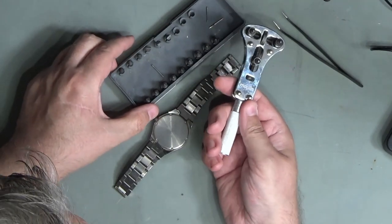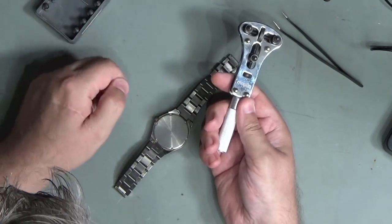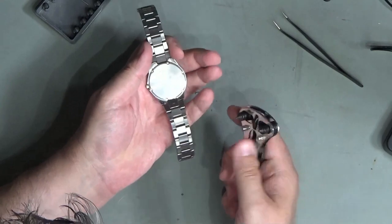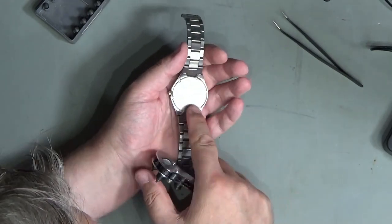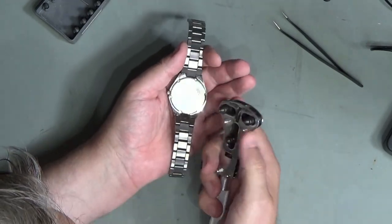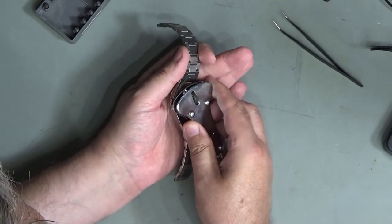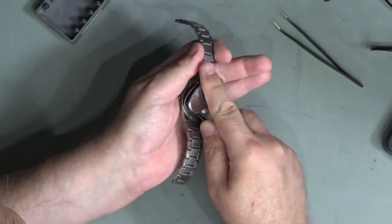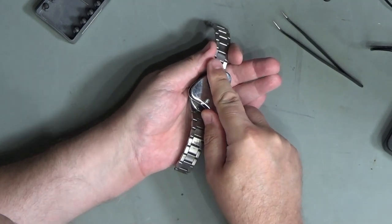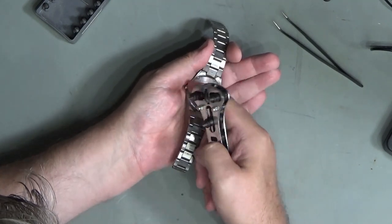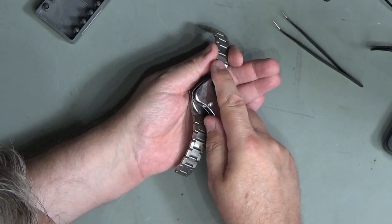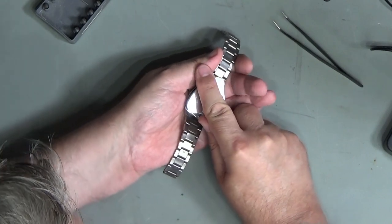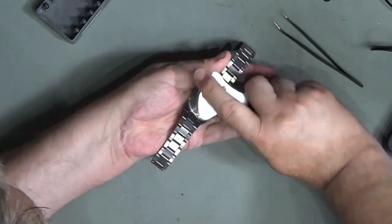Seiko tend to do their watch backs up a little bit hard from the factory anyway. We position those so they go on three alternative points and there we go, it's just loosened off now.